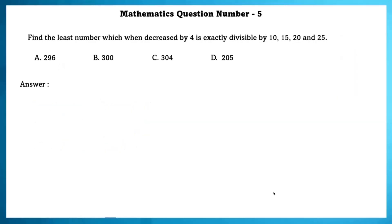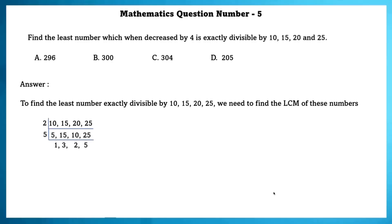Mathematics question number 5. Find the least number which decreased by 4 is exactly divisible by 10, 15, 20 and 25. To find the least number exactly divisible by 10, 15, 20, 25 we need to find the LCM of these numbers.